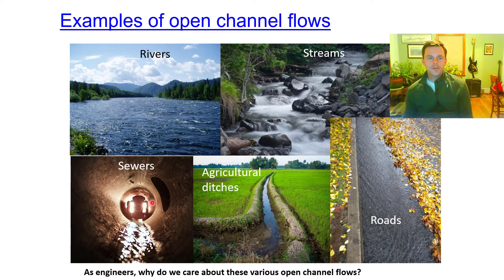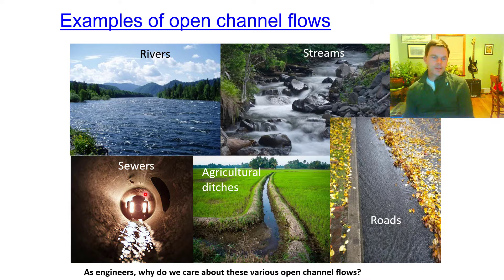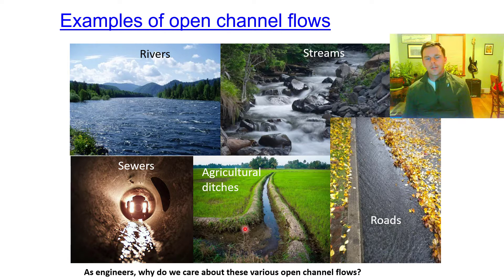Sewers are really important. Anytime you are designing a city or a development, you have to make sure that you're going to be able to convey the storm water runoff — that's the water from rain — as well as the municipal runoff, which is from houses and businesses. A partially full sewer is actually a good example of an open channel flow. Once the pipe is entirely full, it's pressurized, and that's covered by pipe flow. Agricultural ditches you have to design in order to convey water off the land and maybe even filter out pollutants as it makes its way to a receiving water like a stream.